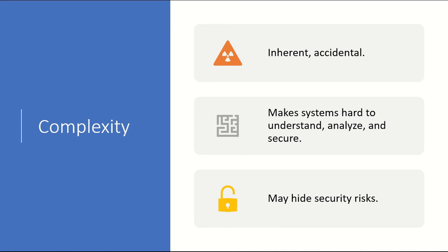Complexity makes a system hard to understand. As security aspects are introduced during development, it increases complexity, making the code harder to analyze and secure. Complexity may also hide security risks. For example, if you're developing software that is already very complex in nature, it can hide many security risks within it.